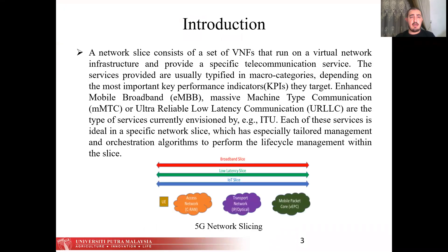Introduction. A network slice consists of a set of virtual network infrastructure and provides a specific telecommunication service. The services provided are usually typified into micro-categories depending on the most important key performance indicators. The targets — enhanced mobile broadband, massive machine type communication, or ultra-reliable low latency communication — are the types of services currently envisioned by ITU.